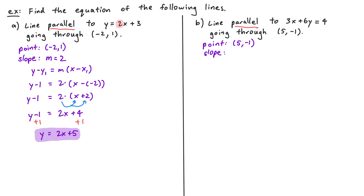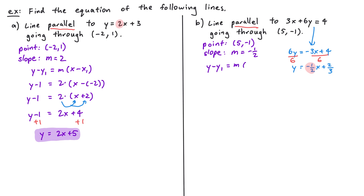To get y by itself we divide both sides by 6, giving y = -1/2 x + 2/3. Now that the line is in slope-intercept form we can read off the slope: it's negative 1/2. Since our line is parallel to 3x + 6y = 4, we use the same slope, m = -1/2. With the point (5, -1) and slope in hand, we write the equation in point-slope form: y - y₁ = m(x - x₁).